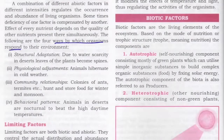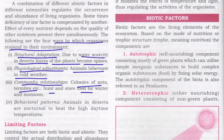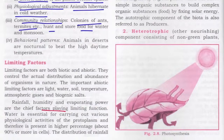There are four ways organisms respond to their environment. First, structural adaptation — due to water scarcity in deserts, leaves of plants become spines. Second, physiological adjustment — animals hibernate in cold weather. Third, community relationship — colonies of ants and termites hunt and store food for winter and monsoon seasons. Fourth, behavioral patterns — animals in the desert are nocturnal to beat the high daytime temperature. The important abiotic limiting factors are light, water, soil, temperature, atmospheric gases, biogenic salts, rainfall, humidity, and evaporating power.